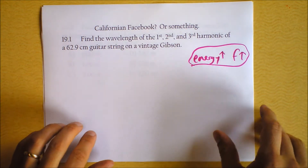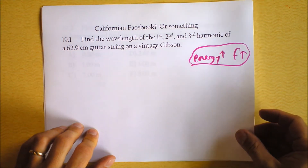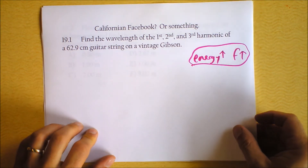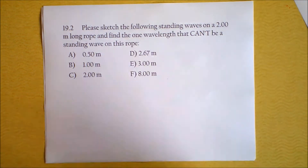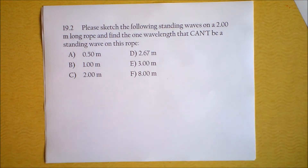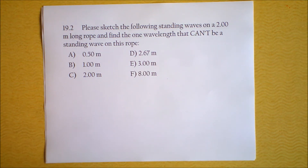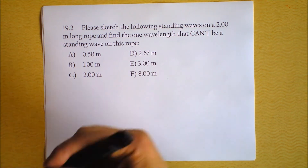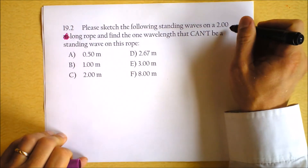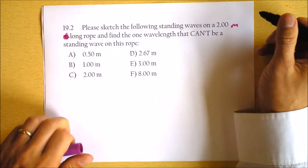What's really cool is that the wavelength is not always the length of the string. And that brings us to the next question, in which I have a string, and I'm actually suggesting to you that of these six wavelengths, we can establish five of them on the rope. Wow, what poor formatting though — shame on you. I should have checked this.